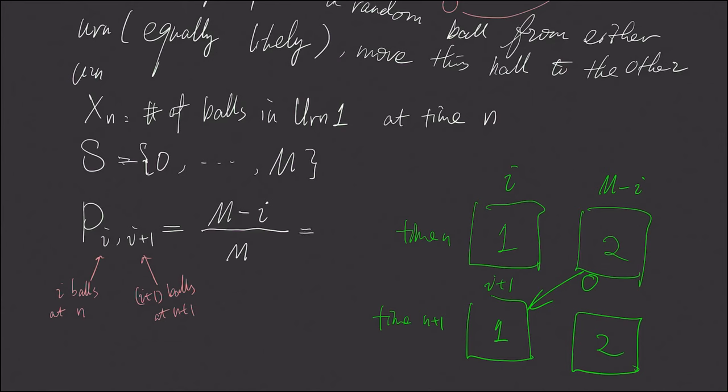And apparently, this is the same as one minus the probability of transition from i to i minus one. Because we either pick a ball from urn number two or urn number one.